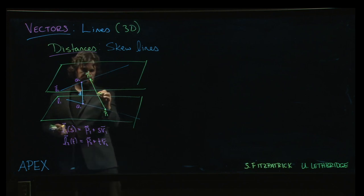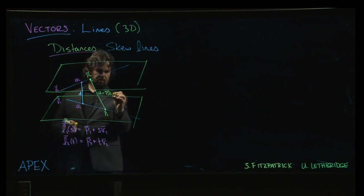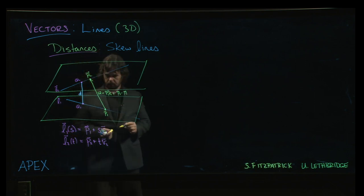And so we can form a vector between those two lines, like so. Let's call that vector W. This vector going from P1 to P2, which is, by the way, just the vector P2 minus the vector P1.